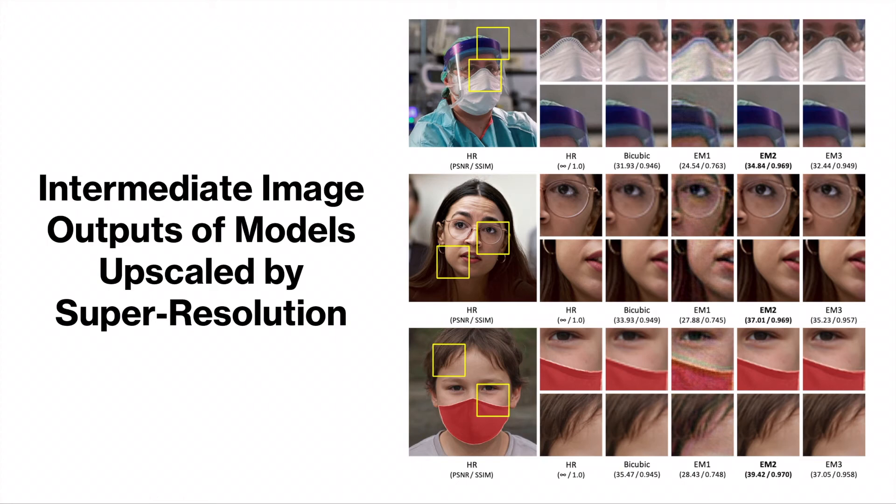And as seen from the images, EM2 was the best performing model which performed much better than bicubic upsampling and EM3 also performs better than bicubic upsampling. However, EM1 does not seem to perform as well as even bicubic upsampling and out of all the models, it happens to be the worst performing model.